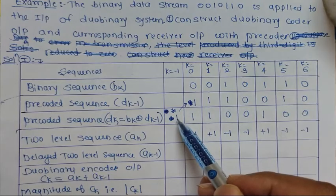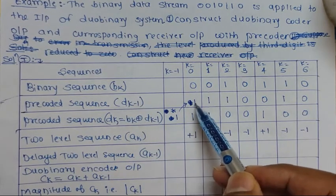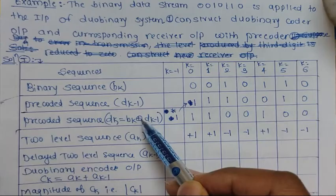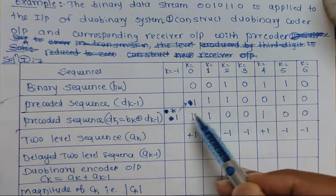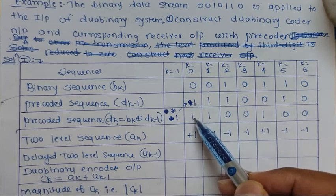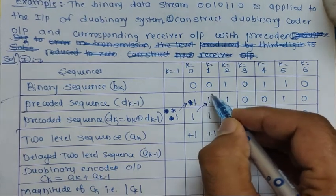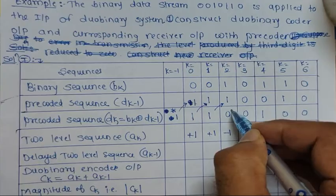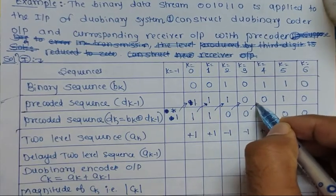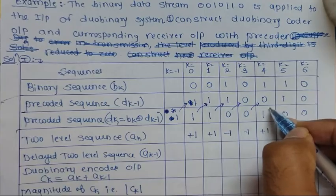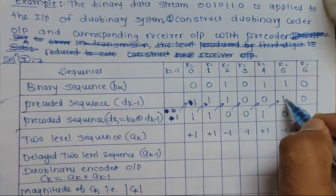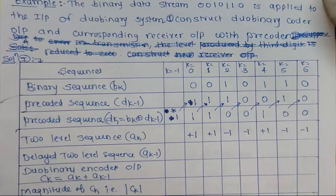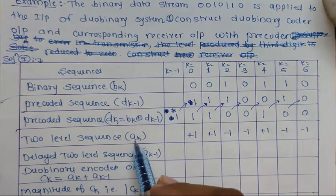dk = bk XOR dk-1. The initial assumed value of one is shifted into dk-1. Computing each bit: 0 XOR 1 = 1; 0 XOR 1 = 1; 1 XOR 1 = 0; 0 XOR 0 = 0; 1 XOR 0 = 1; 1 XOR 1 = 0; 0 XOR 0 = 0. So the precoded sequence dk is: 1, 1, 1, 0, 0, 1, 0, 0.